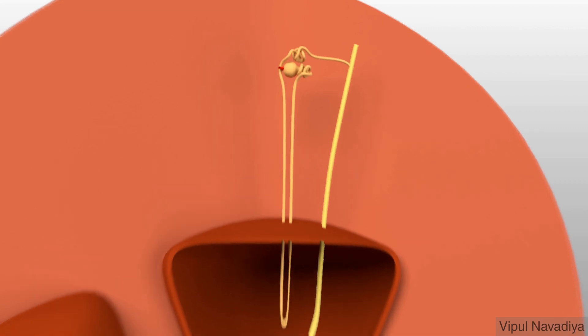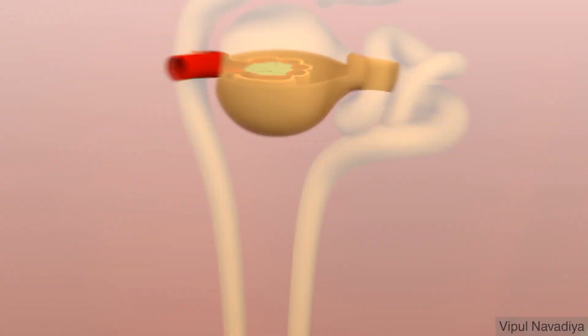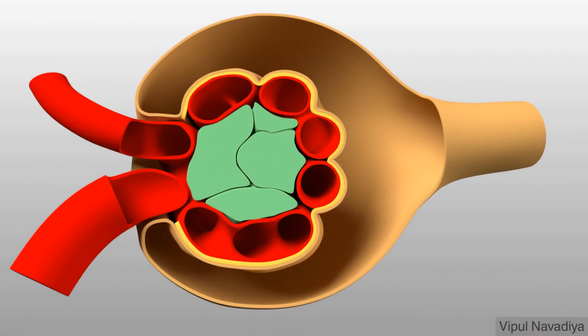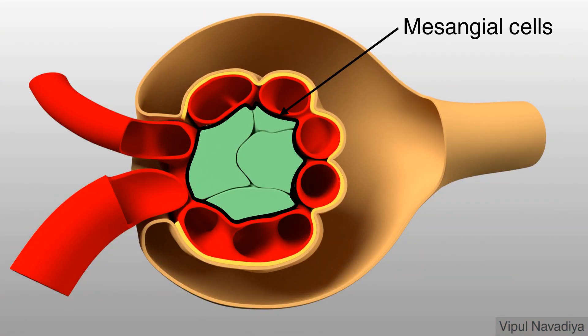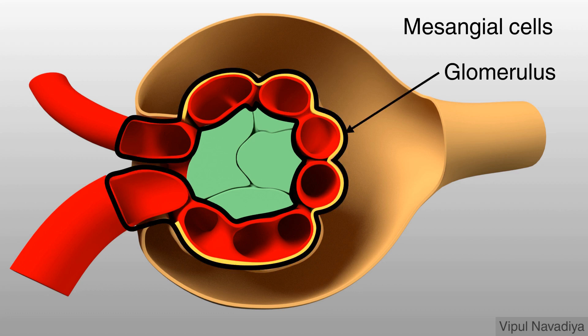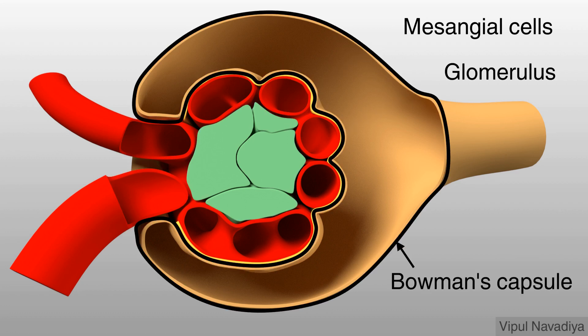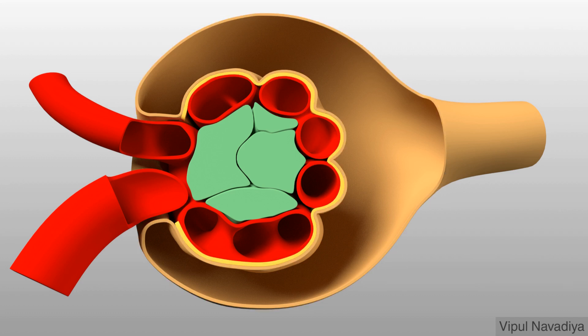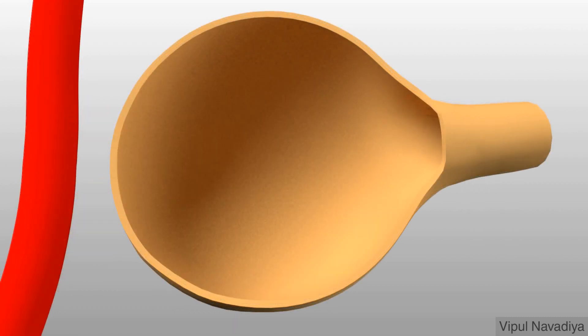Now let's see the structure of renal corpuscle. It has three components: mesangial cells, glomerulus, and Bowman's capsule. Their arrangement can be easily understood if you know how the corpuscle forms during embryonic life. So let's go through it quickly.